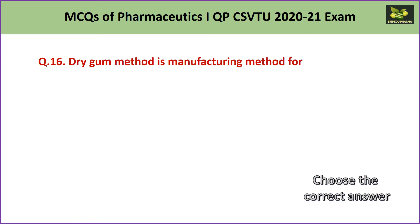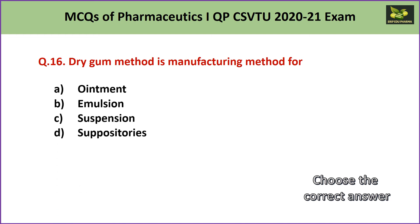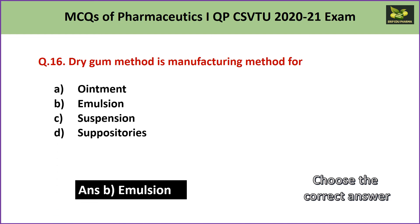Question number 16: Dry gum method is a manufacturing method for A. ointment, B. emulsion, C. suspension, or D. suppositories. The answer is B — emulsion — because for emulsions we use the wet gum method and the dry gum method, especially for preparing the primary emulsion. Hence the answer is B.